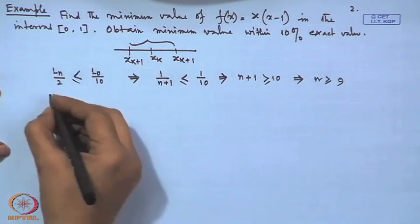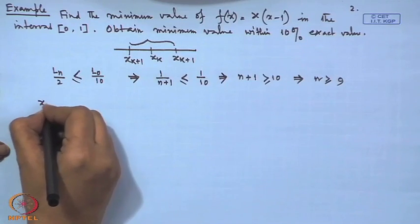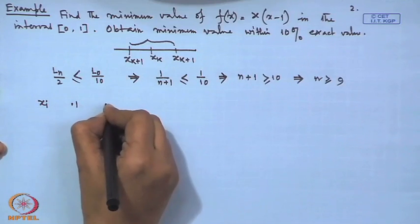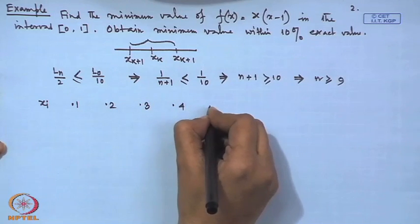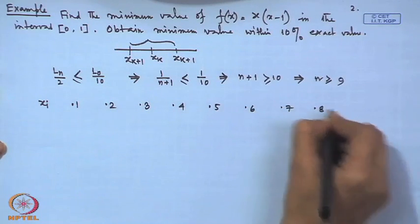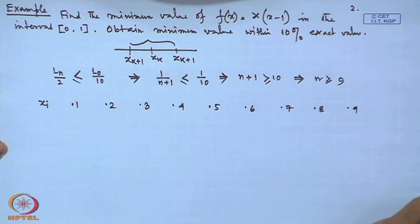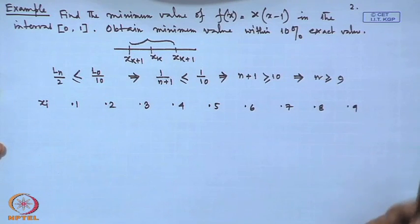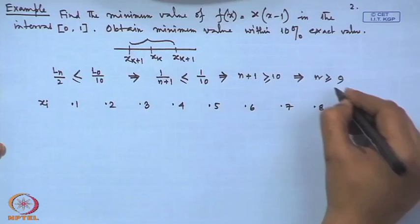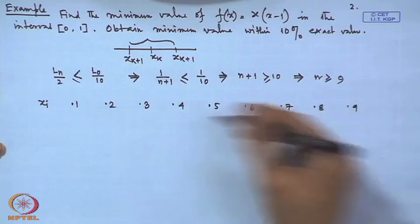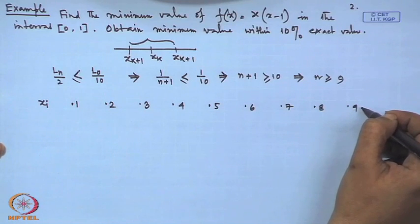We subdivide the interval [0, 1] into 10 sub-intervals, giving us 9 points: 0.1, 0.2, 0.3, 0.4, 0.5, 0.6, 0.7, 0.8, 0.9. Increasing the number of experiments would yield a better result. We now evaluate the functional values f(x) = x(x − 1) at each point.